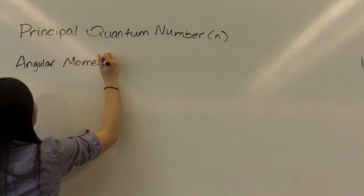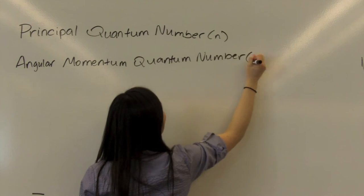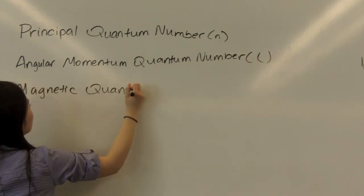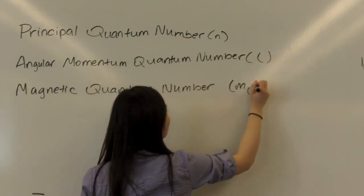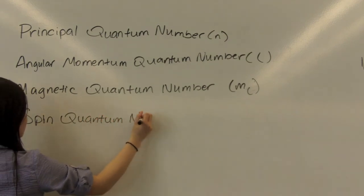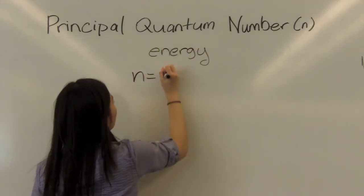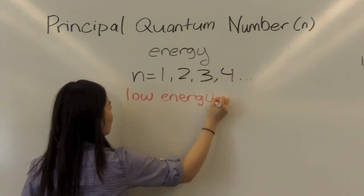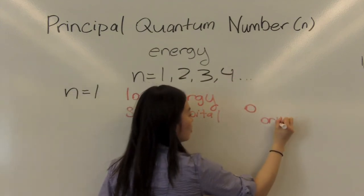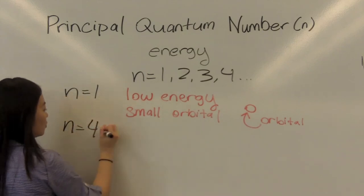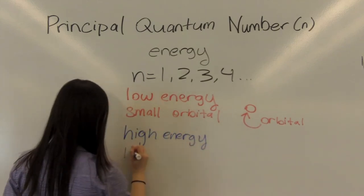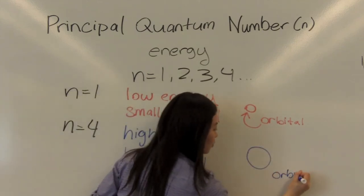Principal quantum number N. The principal quantum number describes the energy of an electron. The smaller the value of N, the lower the energy, and thus the smaller the orbital. The principal quantum number can hold any positive integer value.